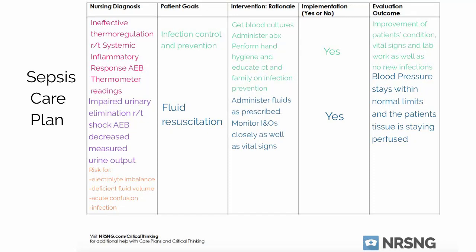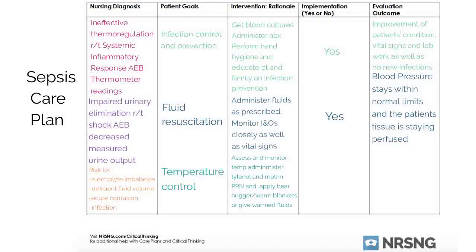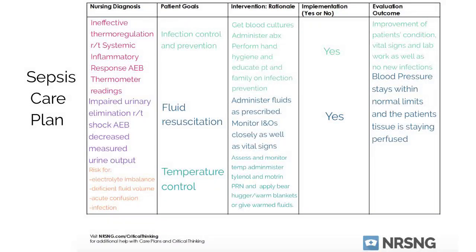For the third patient goal, I put temperature control. Assess and monitor the temperature, and administer Tylenol and Motrin as needed. This is important because if the patient becomes too febrile, it essentially cooks their insides and they can have a febrile seizure even as an adult. Over 105°F is when we really start to be very concerned — you want to immediately work on cooling them down by giving cool fluids and placing ice packs in the groins. If they are too cold, that's also a problem. If they are hypothermic, apply a bear hugger, warm blankets, and warm up IV fluids.